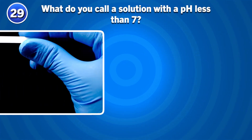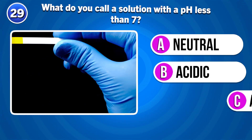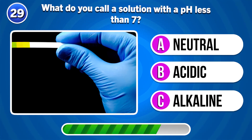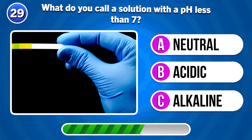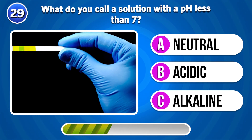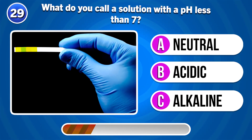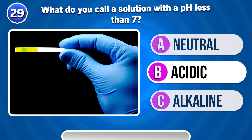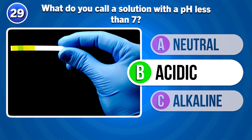What do you call a solution with a pH less than 7? Acidic.